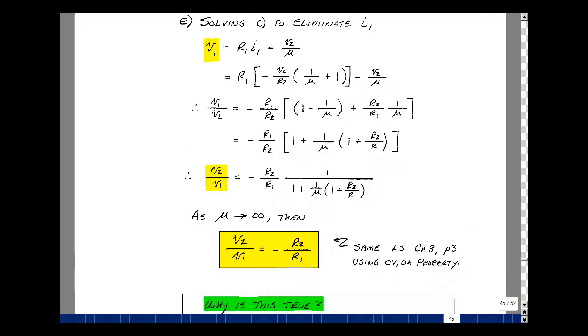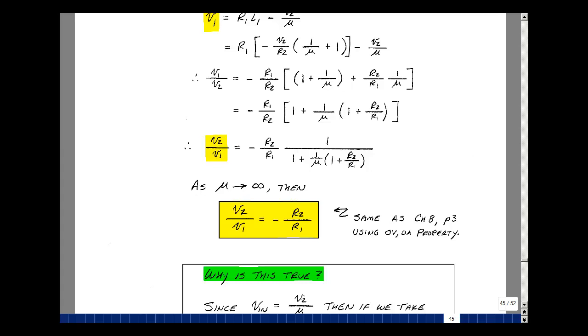Now, if the op-amp is ideal, we're saying that mu approaches infinity. So let's take the limit as mu approaches infinity. Let's assume that this is just a resistor ratio plus 1. So we've just got a number here that's finite. When I divide it by a really big number, it approaches 0. And I'm left with minus R2 over R1. That's the same thing we got with the 0 volt 0 current property.